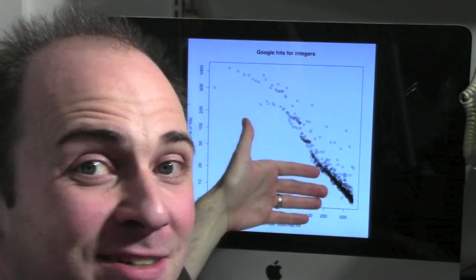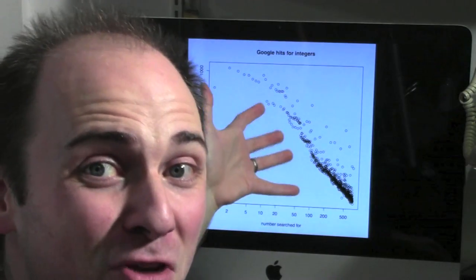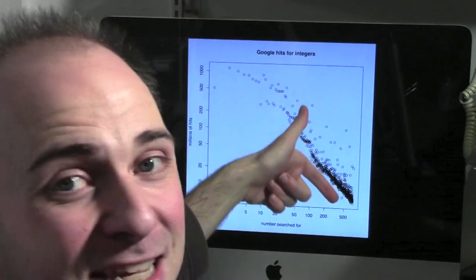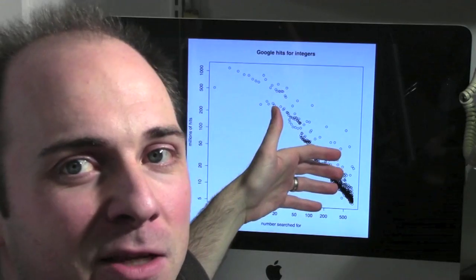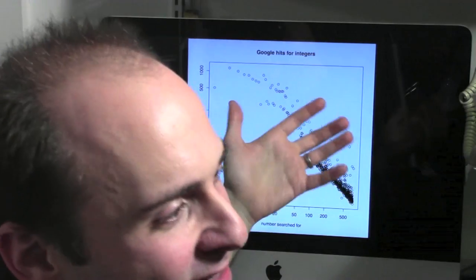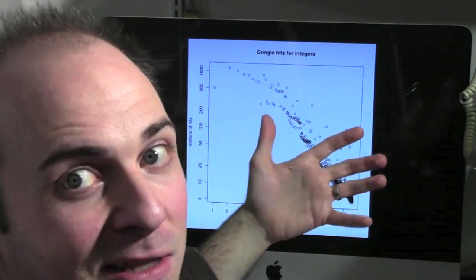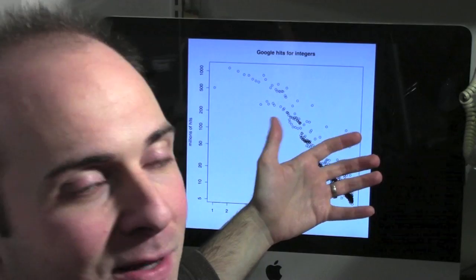And when you look at the graph of this function, it's not random. There's real structure here. The function's decreasing - larger values give smaller outputs, because there's fewer web pages that talk about really large numbers than about popular small numbers.